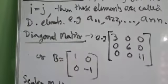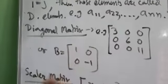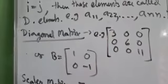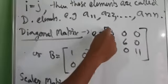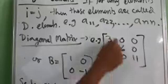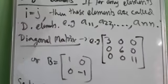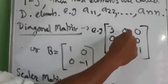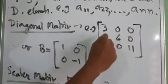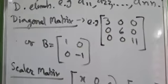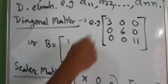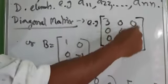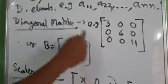Next, Diagonal Matrix. For example, this will be a diagonal matrix. Why? Because in this case, all the diagonal elements are non-zero, but all the non-diagonal elements are zero. So for a matrix to be diagonal, all the diagonal elements should be non-zero and all the non-diagonal elements should be zero.